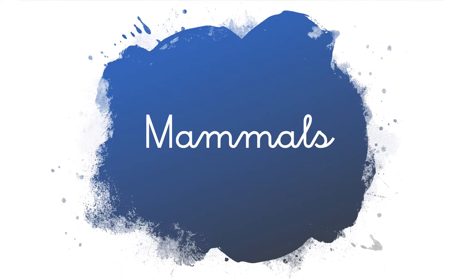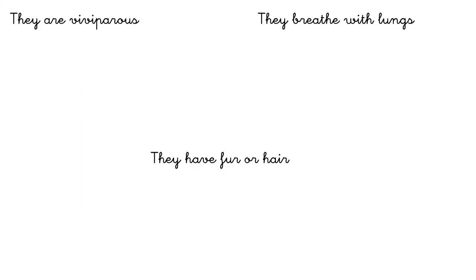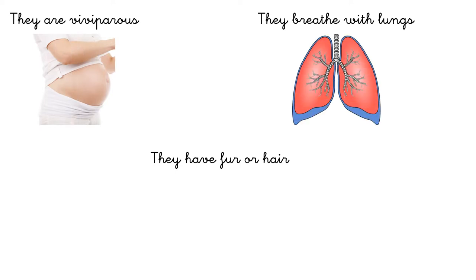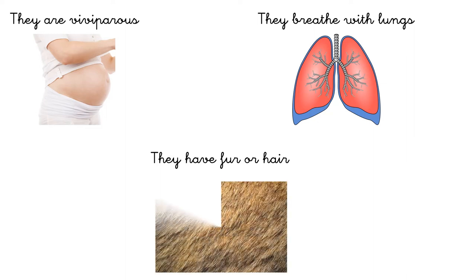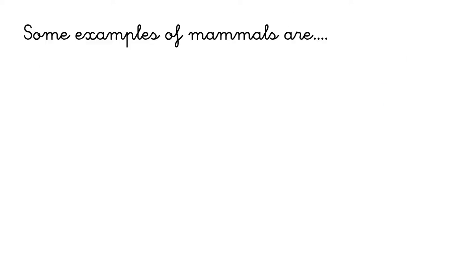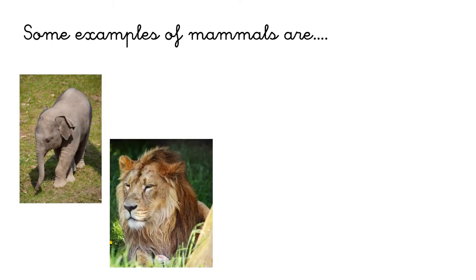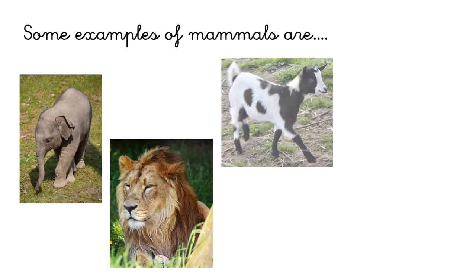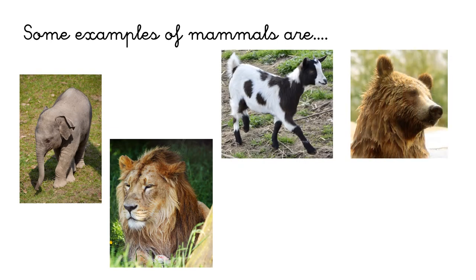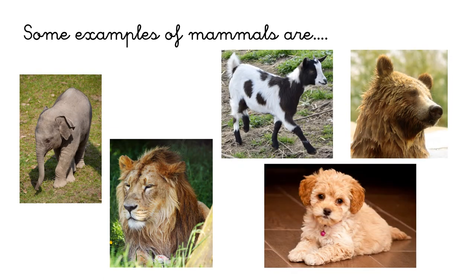First, we are going to talk about mammals. They are viviparous, so they are born from a mummy. They breathe with lungs, and they have fur or hair. Some examples of mammals are the elephant, the lion, the goat, the bear, and the dog.